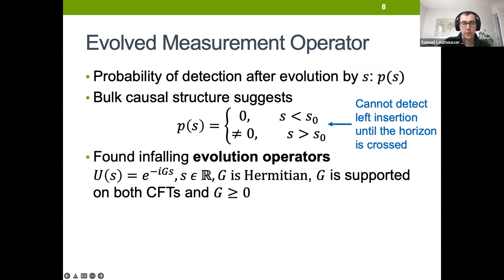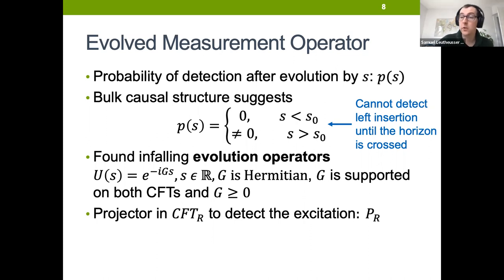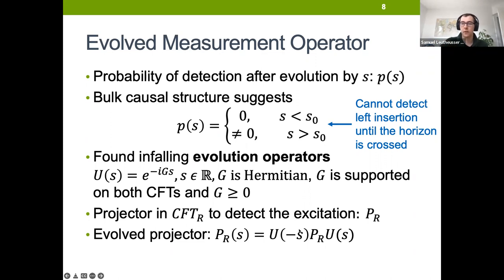We found these infalling evolution operators that take the form of a one-parameter unitary group. When we describe this evolution and ask what is the CFT description of this observer falling past the horizon and making this measurement, we can imagine that the observer who's originally in the right region has a projector designed to measure the effect of the excitation. As they fall into the black hole, they carry their projector with them, and their projector evolves under U(S). Importantly, it will gain some support on the left theory.